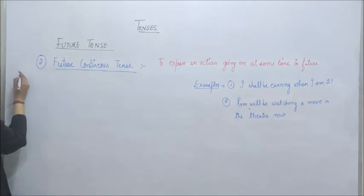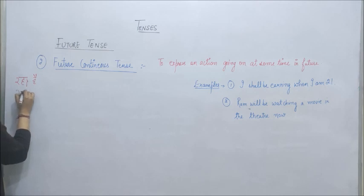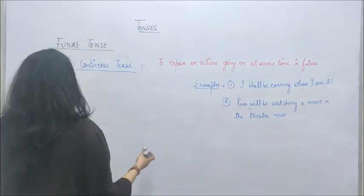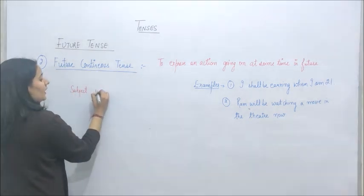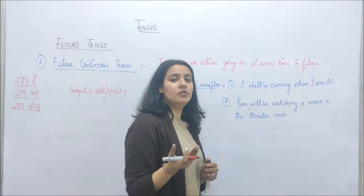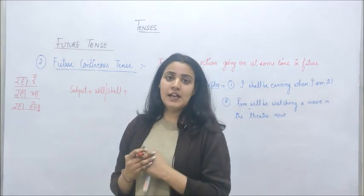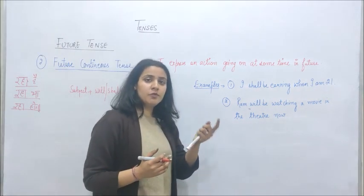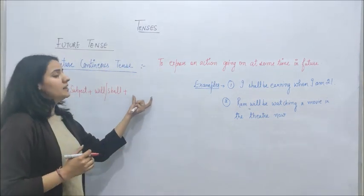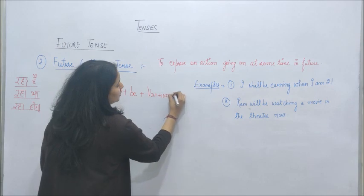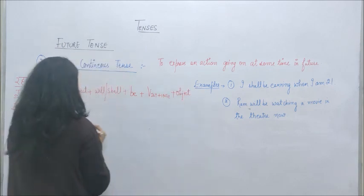If we remember the difference: present continuous tense uses 'raha hai', past continuous uses 'raha tha', and future continuous uses 'raha hoga'. This is the difference between present, past and future continuous. For syntax and sentence formation: Subject + will/shall + be + verb (first form + ing) + object. The reason 'be' is used is that after will or shall we cannot use the ing form directly — we must use the first form. So 'be' is placed after will/shall, and then the verb's ing form follows.